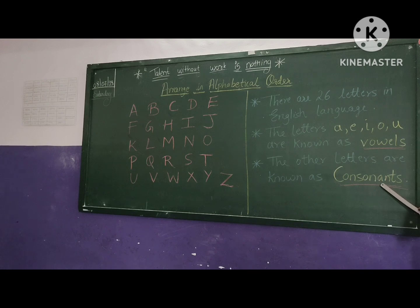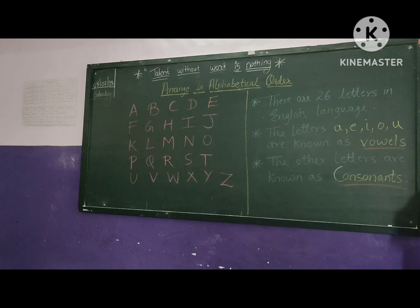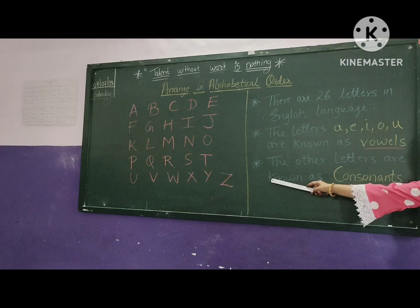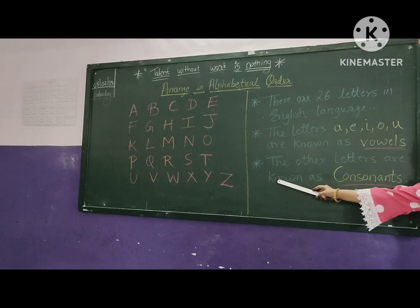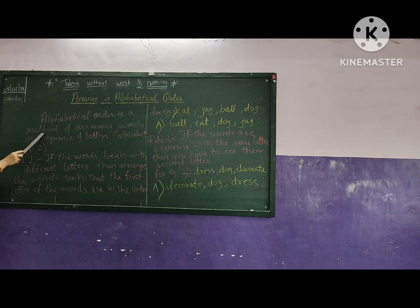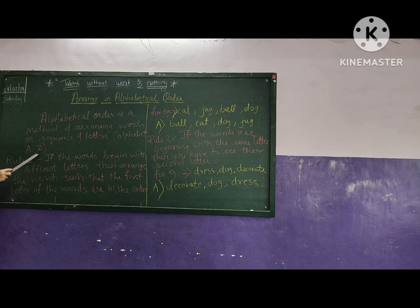So children, I will give you one example so that it will be easy to understand what we mean by alphabetical order. What do you mean by alphabetical order? The definition I have written on the blackboard: alphabetical order is a method of arranging words or a sequence of letters — alphabet A to Z — in a sequential manner.